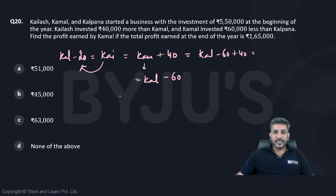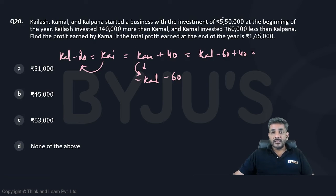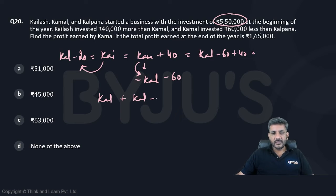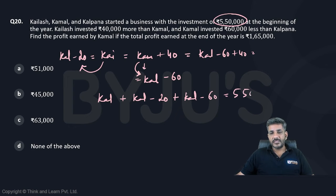So Kailash is Kalpana minus 20, Kamal is Kalpana minus 60, and Kalpana is Kalpana. The total of all of them is 550,000. So I can say Kalpana plus Kailash (which is Kalpana minus 20) plus Kamal (which is Kalpana minus 60) equals 550,000.